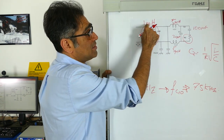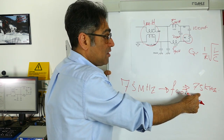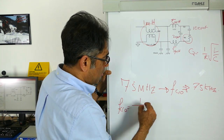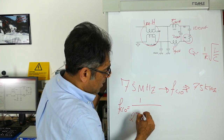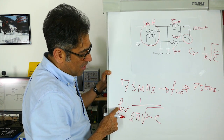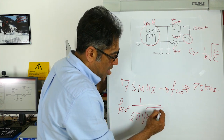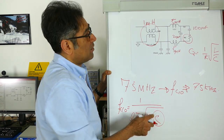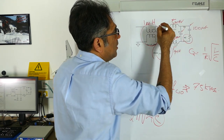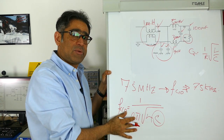I know that the common mode choke is 1 millihenry, and the cutoff frequency is 75 kilohertz. Therefore, using F_cutoff = 1 / (2π√(LC)), with F = 75 kHz and L = 1 millihenry, I can work out C and then select the appropriate capacitors. I have now calculated all the remaining component values — the common mode choke, the common mode capacitors, and my design is complete.